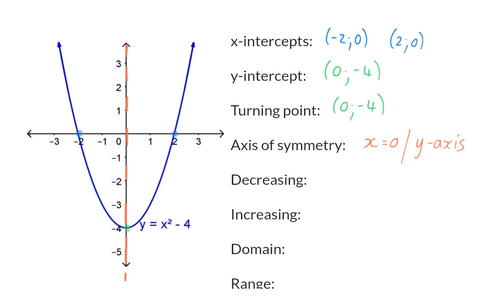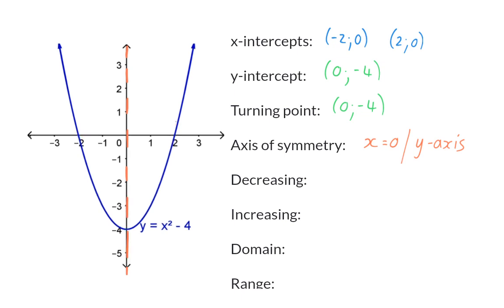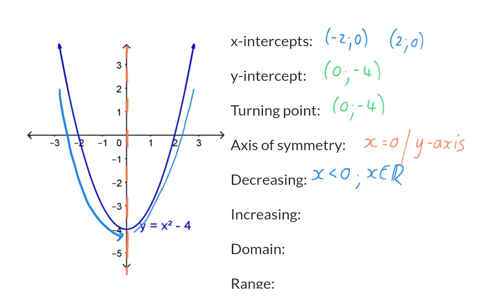You also need to identify where the graph decreases and increases. This graph decreases to the left of our axis of symmetry — these are all x values smaller than zero. The graph increases to the right of the axis of symmetry, meaning all x values bigger than zero.